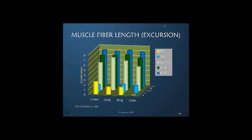Here we're looking at excursion, which is also muscle fiber length. We see that the dorsal and volar interossei — these first two columns — are very small, almost insignificant compared to the significant length of the profundus and the superficialis. And look how close the lumbrical is.